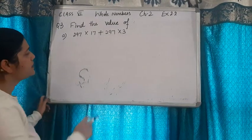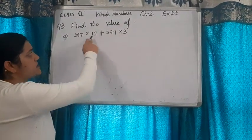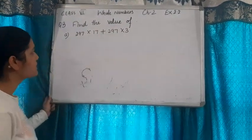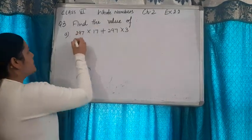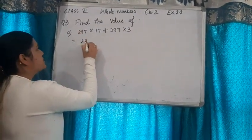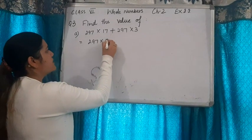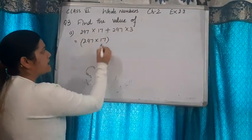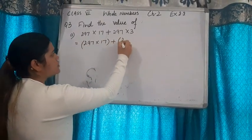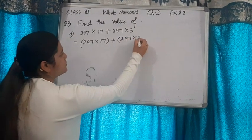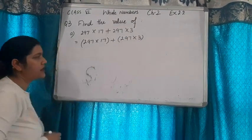Value find karna hai. The signs are multiplication and plus. If I put this 297 into 17 in one bracket plus sign, 297 into 3 in another bracket.